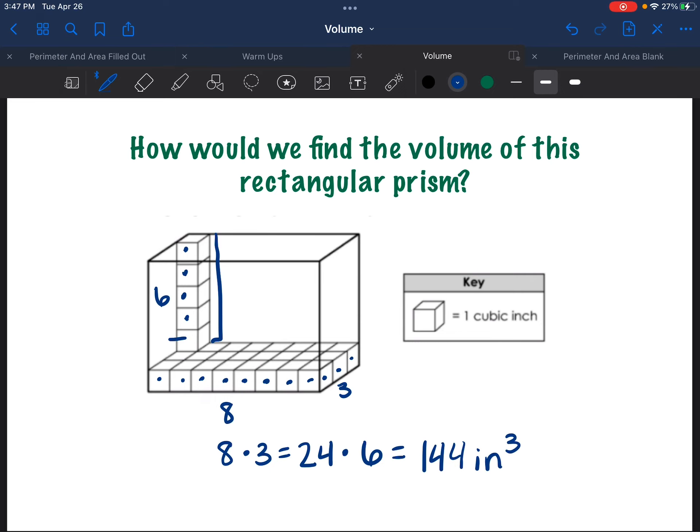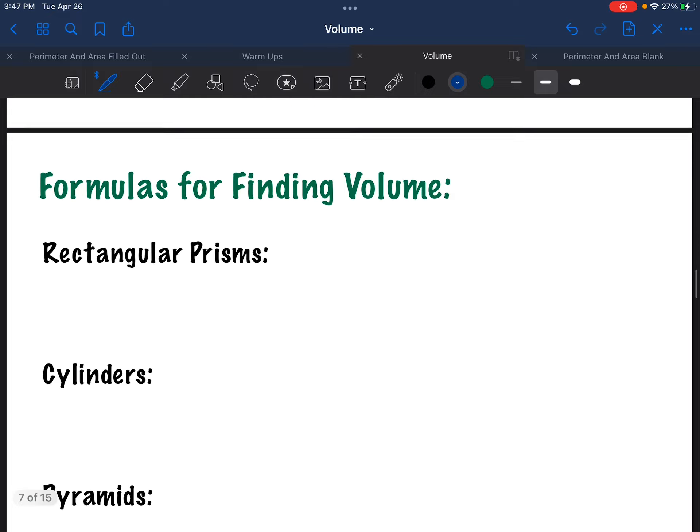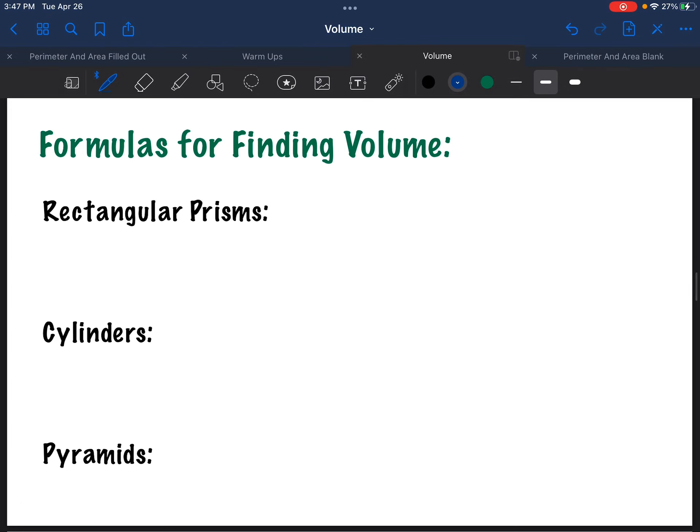So in general, with any rectangular prism, the volume is going to be the length times the width times the height. Or if you prefer, you can always say base times width times height. It doesn't matter as long as you're getting those three dimensions. And let's go ahead and use this page as our notes that we're going to take and fill out as we go through this video.